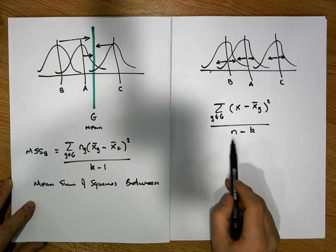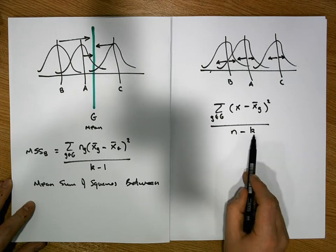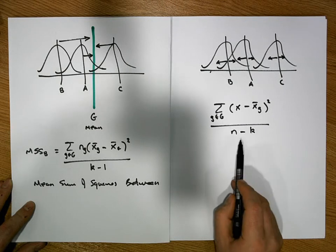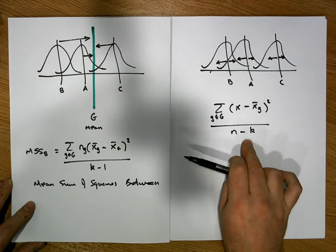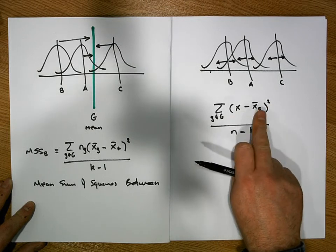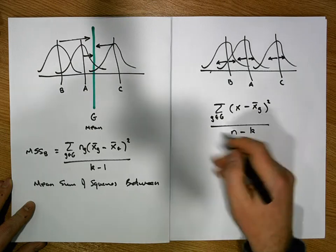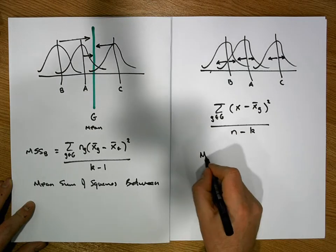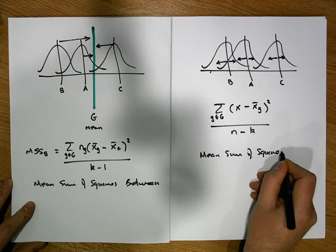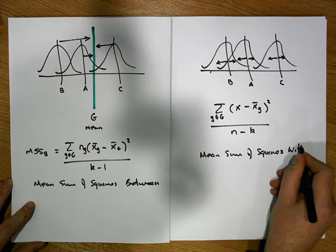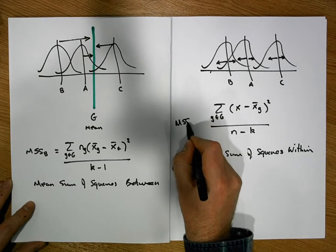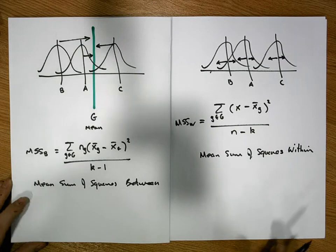As n gets large, the number of groups won't really influence this number. Effectively what we're calculating is an average — the average square distance that individual observations are away from their own group. This particular measure is known as the mean sum of squares within, because we're measuring variance within the groups themselves.